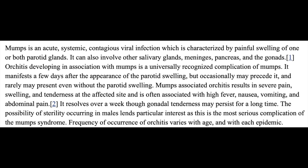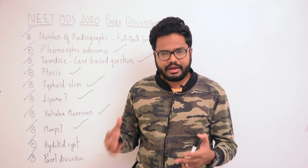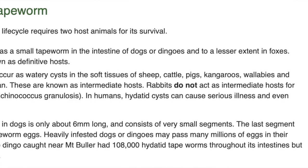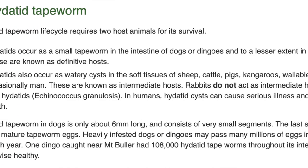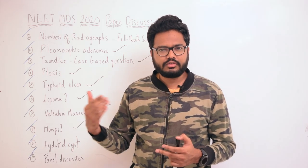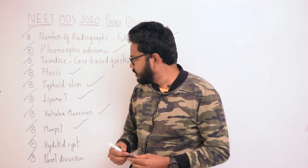Mumps-related orchitis resolves over a week, though gonadal tenderness may persist for a long time. The possibility of sterility occurring in males makes this the most serious complication of mumps. The frequency of orchitis varies with age and with each epidemic. Based on keywords like fever, pain in the parotid region, and swelling in the gonadal region, the answer points to a viral infection caused by paramyxovirus — mumps.